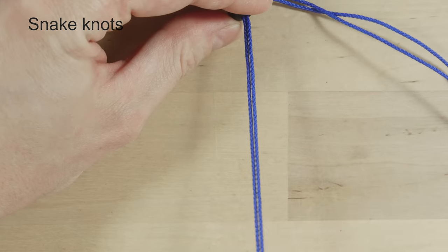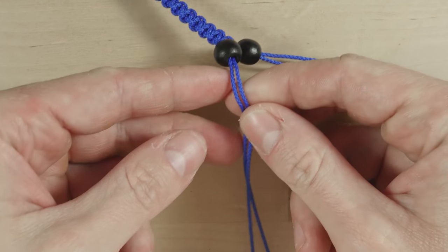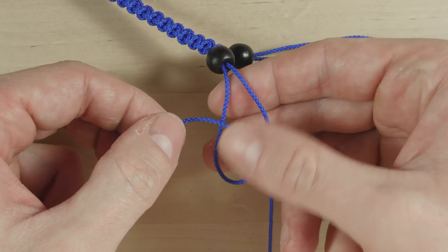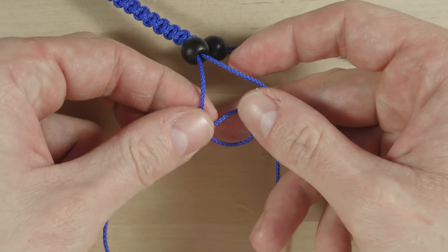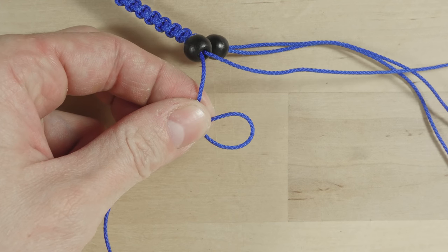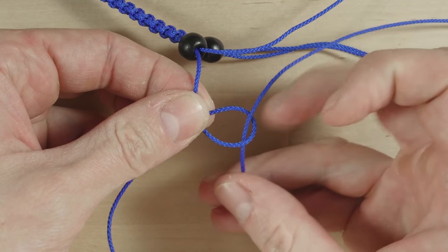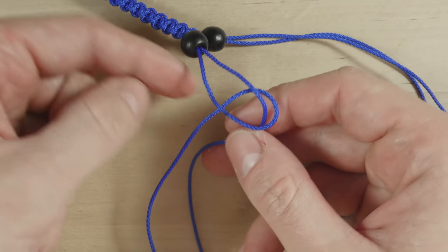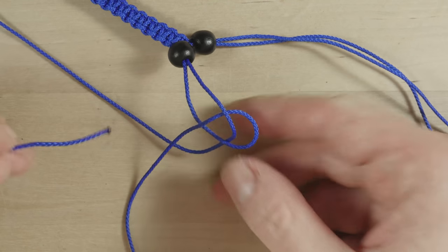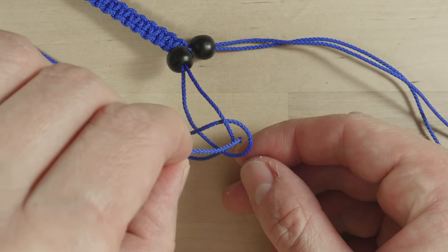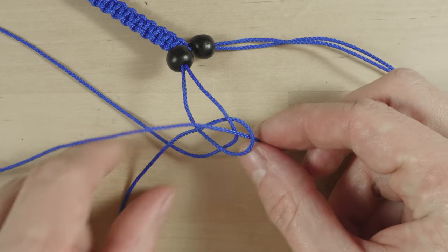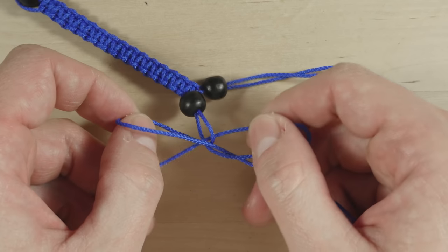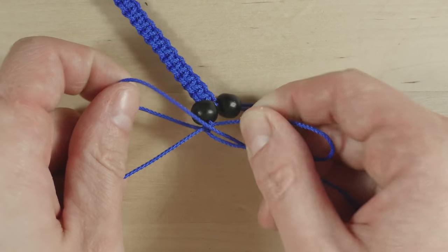Then lock them into place using a couple of snake knots. So to do this, take a pair of strands, take the left strand, and create a loop. Take the right strand, pass top down through the loop, behind the left hand, over the top, and back into the loop. Like this. Then tighten up as close to the bead as possible.